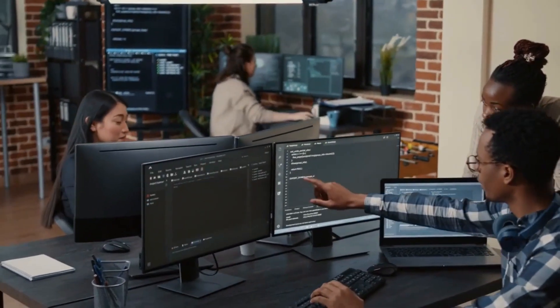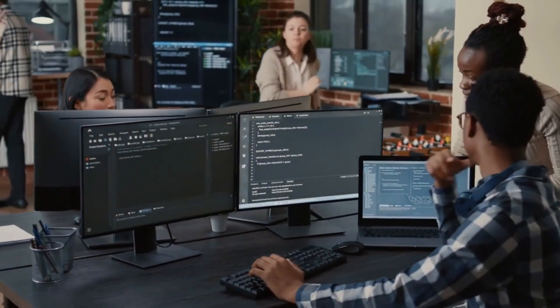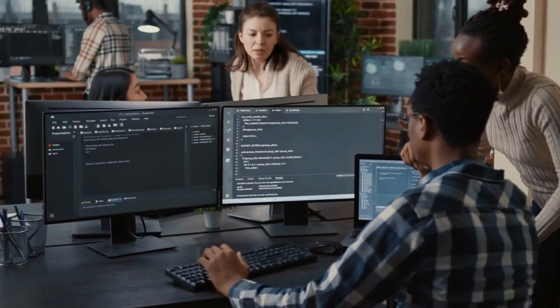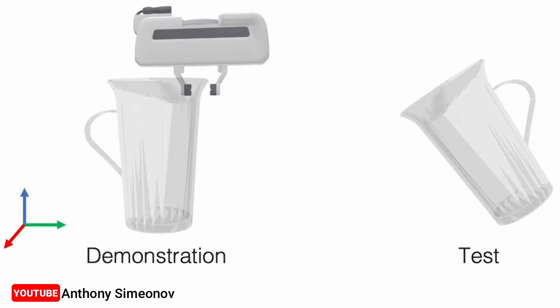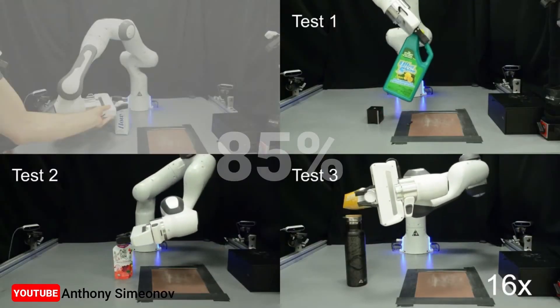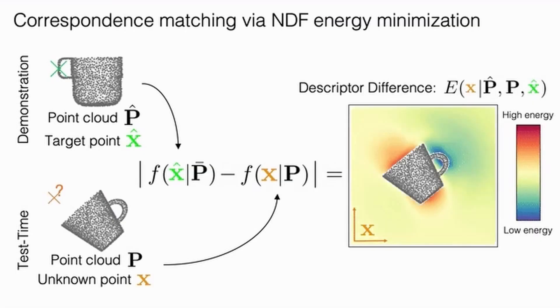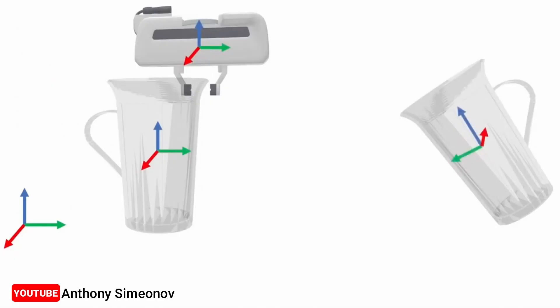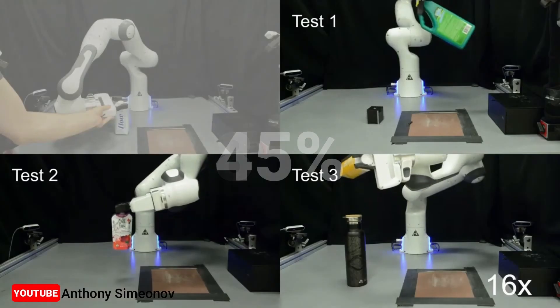To overcome this challenge, the researchers created a new type of neural network model, a neural descriptor field, or NDF, that learns the 3D geometry of a class of items. The model computes the geometric representation for that specific item using a 3D point cloud, which is a set of data points or coordinates in three dimensions.